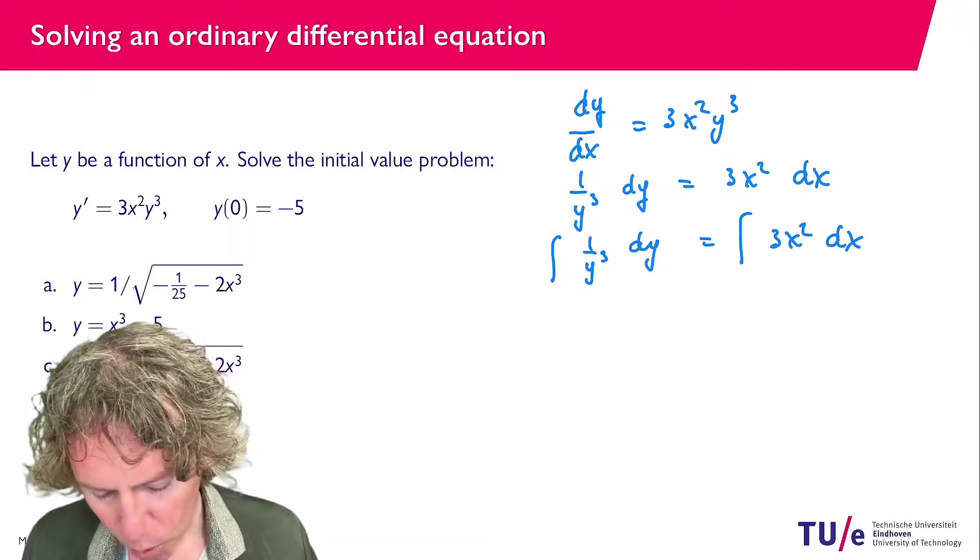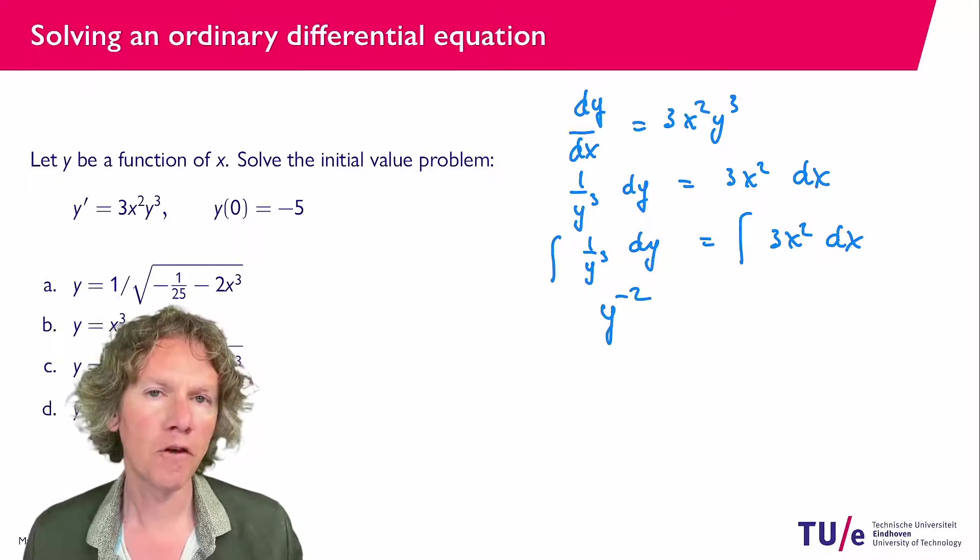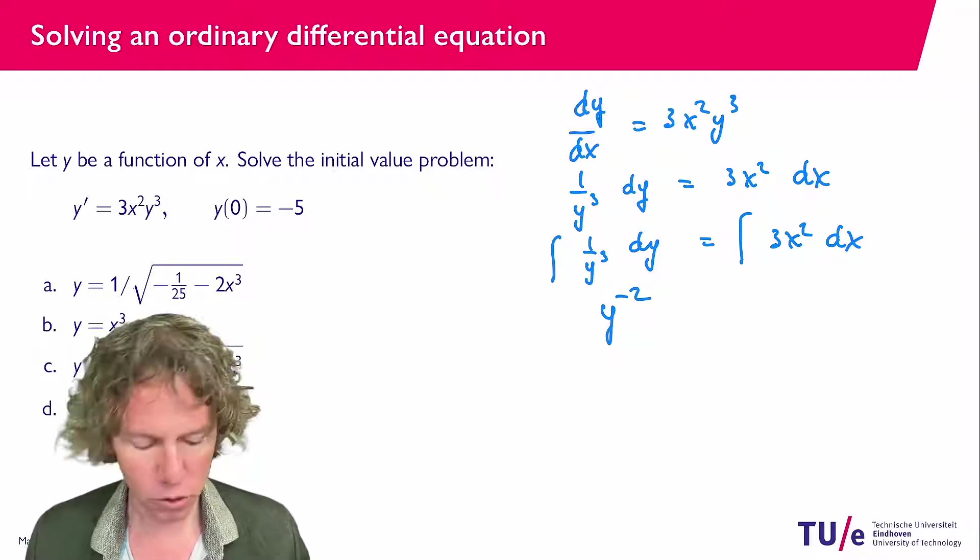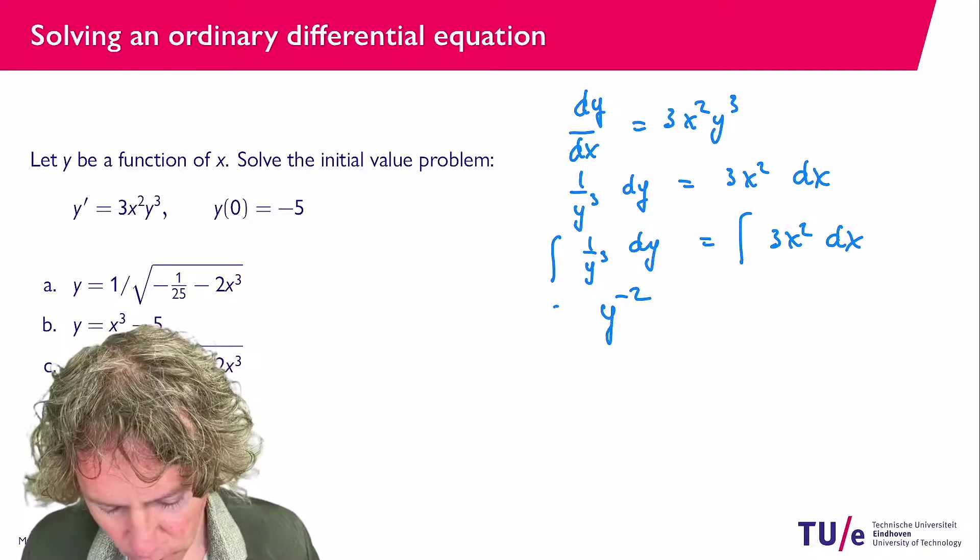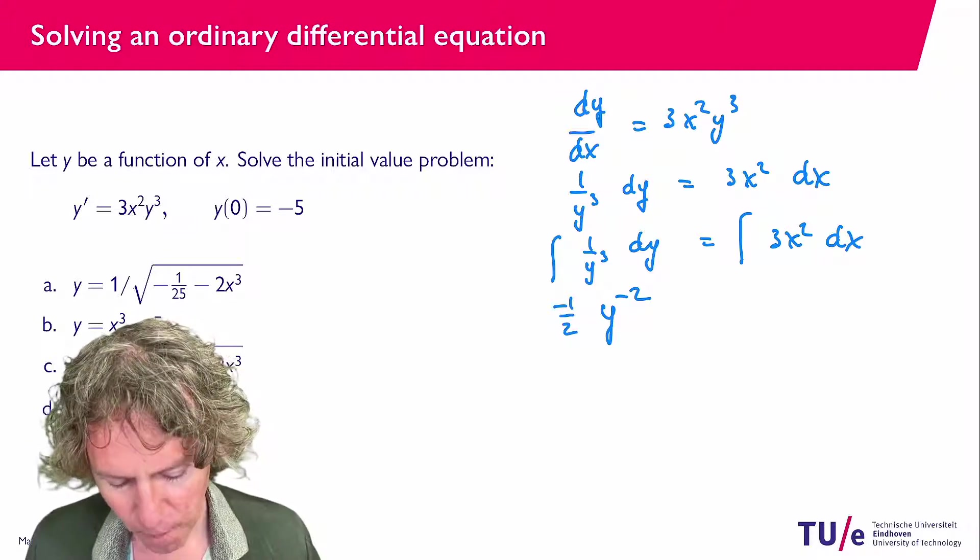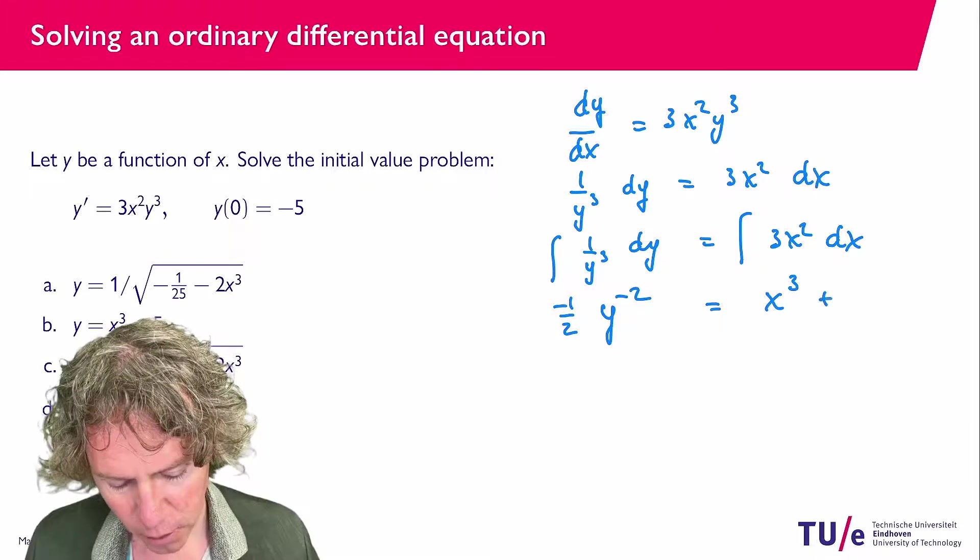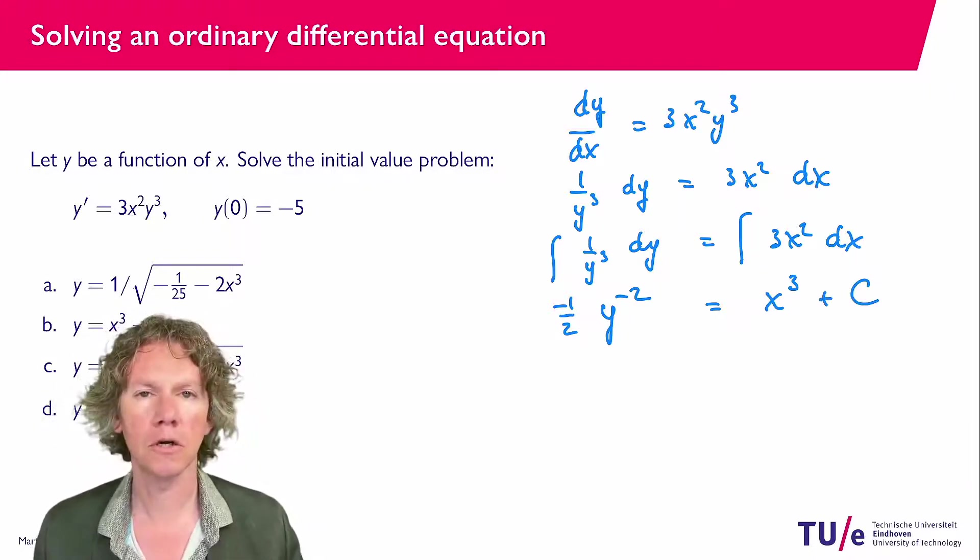So y to the power minus 2 is an antiderivative but if I would differentiate I would get the exponent minus 2 so I have to compensate for that so I get minus 1 over 2 y to the power minus 2 equals and this becomes x to the power 3 plus some integration constant that I call c.